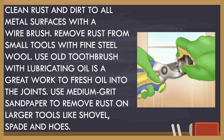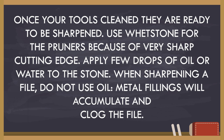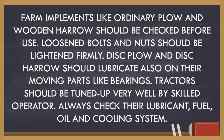Clean rust and dirt from all metal surfaces with a wire brush. Remove rust from small tools with fine steel wool. Use an old brush with lubricating oil to work fresh oil into the joints. Use medium-grit sandpaper to remove rust on larger tools like shovel, spade, and hoe. Once your tools are clean, they are ready to be sharpened. Use a whetstone for pruners because of their very sharp cutting edge. Apply a few drops of oil or water to the stone. When sharpening with a file, do not use oil — metal filings will accumulate and plug the file. Farm implements like ordinary plow and wooden harrow should be checked before use. Loosen bolts and nuts should be tightened firmly. Disc plow and disc harrow should also be lubricated on their moving parts like the bearings.